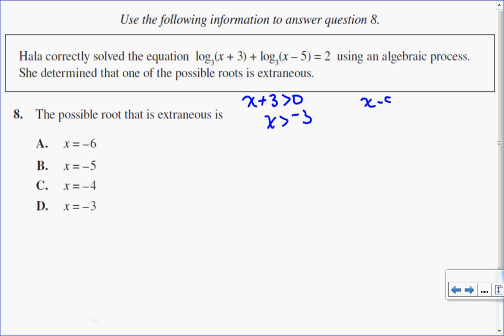My other log has an argument of x minus 5, and that has to be greater than 0, so the solution would be x greater than 5. I always choose the bigger of the two, so the restriction that satisfies the whole equation is that x is greater than 5.